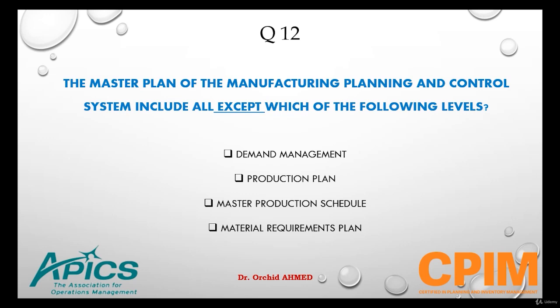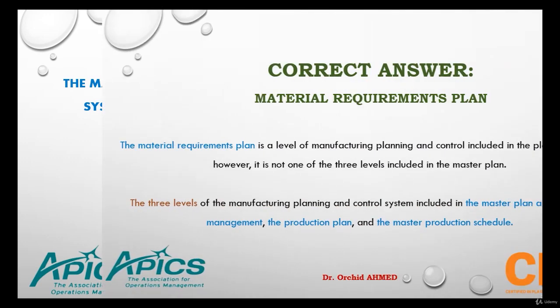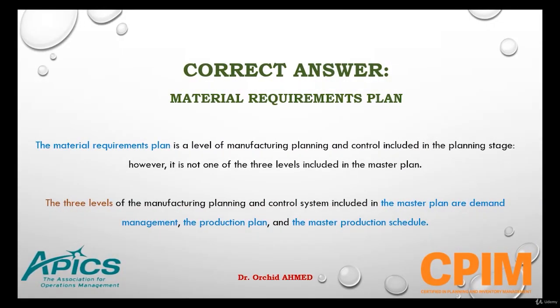The master plan of manufacturing planning and control includes all except the material requirements plan. The material requirements plan is a level of manufacturing planning and control included in the planning stage; however, it is not one of the three levels in the master plan. The three levels included in the master plan are demand management, production plan, and master production schedule.